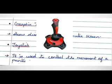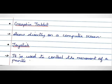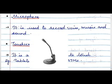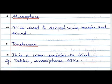The joystick is a pointing device which is used to control the movement of a pointer on the computer screen. It is mostly used to play games on the computer. Next one is the microphone. It is an input device that is used to record voice, music, and sound into the computer system.